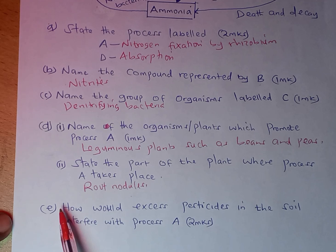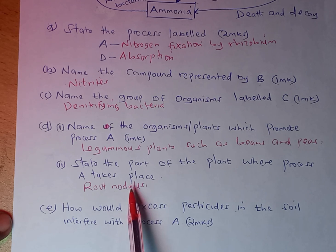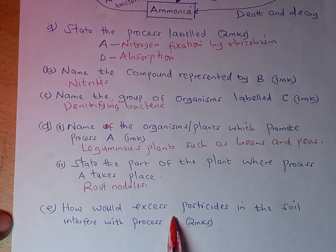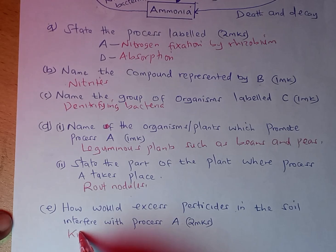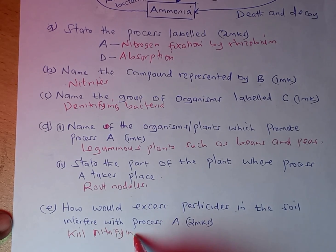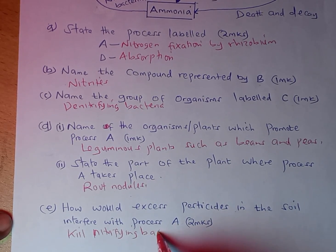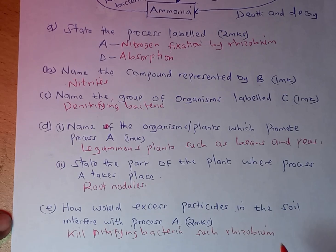The last part is part E: how would excess pesticides in the soil interfere with process A? Remember, process A is nitrogen fixation. Nitrogen fixation is carried out by microorganisms such as bacteria, and therefore excess pesticides would kill the nitrifying bacteria such as Rhizobium.